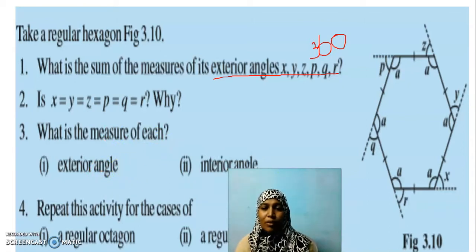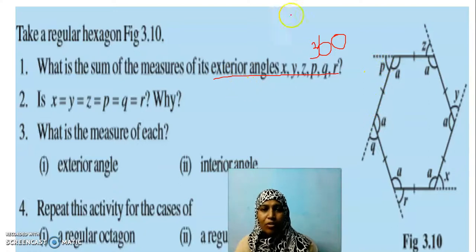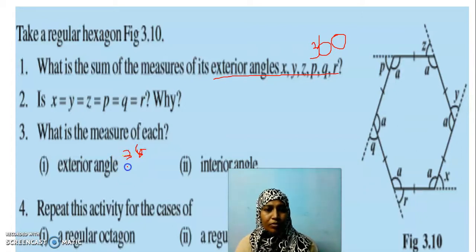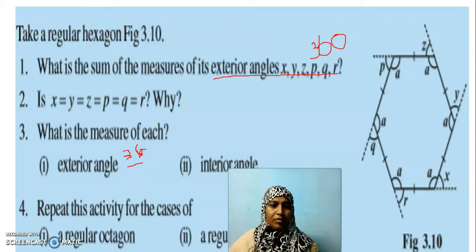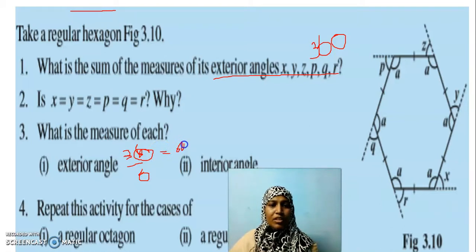How many angles do I have on the exterior? Six angles. Totally how much? 360. So 360 divided by 6 — what will be the measure of one angle? It will be equal to 60 degrees. So this p is equal to 60 degrees, q is also 60, r is also 60 — everywhere it is 60.